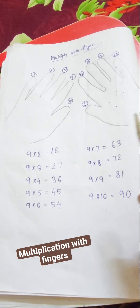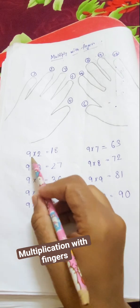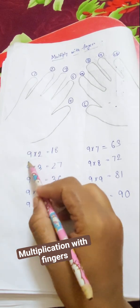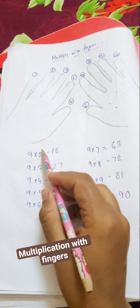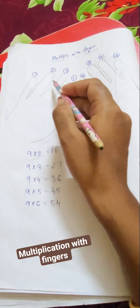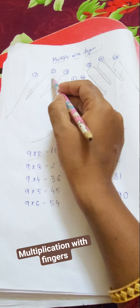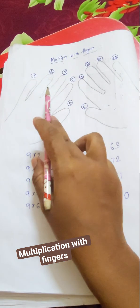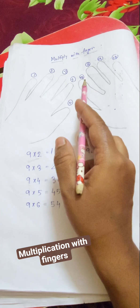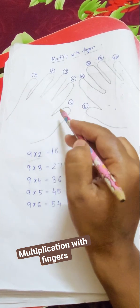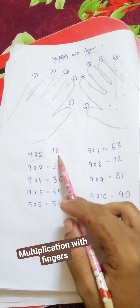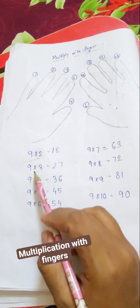Here, to multiply 9 with 2, simply what we have to do is cross the number 2 finger. Then what comes before 2? 1, so I have put 1 over here. And after 2, how many fingers are there? 1, 2, 3, 4, 5, 6, 7, 8. So I have put 8 over here.